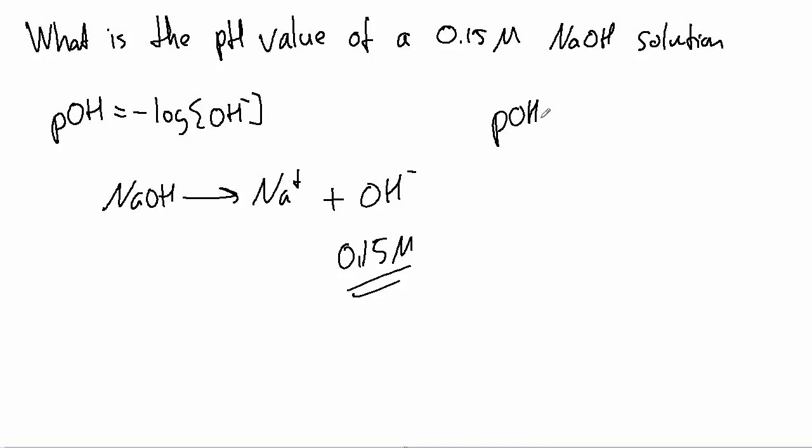Now, the pOH is then found the same way as before, the negative log of 0.15, which gives me again 0.823.